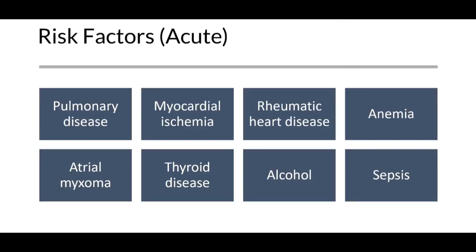Several medical conditions can tip patients into acute atrial fibrillation. These include pulmonary disease, myocardial ischemia, rheumatic heart disease, anemia, atrial myxomas, thyroid disease including hyper- and hypothyroidism, alcoholism, as well as sepsis. This is something we can monitor for in hospitalized patients on telemetry in order to detect if they are going into AFib, and recognizing this early is extremely important when it comes to managing these patients.